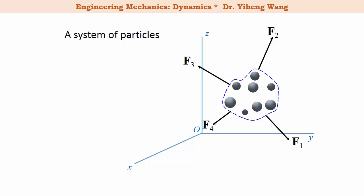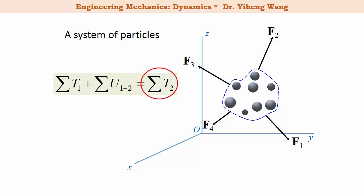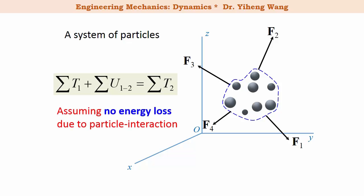The principle of work and energy can also be applied to a system of particles. In that equation, T₁ is the total kinetic energy of all particles in the system at the initial state, the middle term is the total work done by all external forces during the process, and T₂ is the total kinetic energy at the final state. When using this equation, keep in mind that we assume there is no energy loss due to particle interaction — for example, if particles collide, energy lost as heat or sound means this equation will not apply.